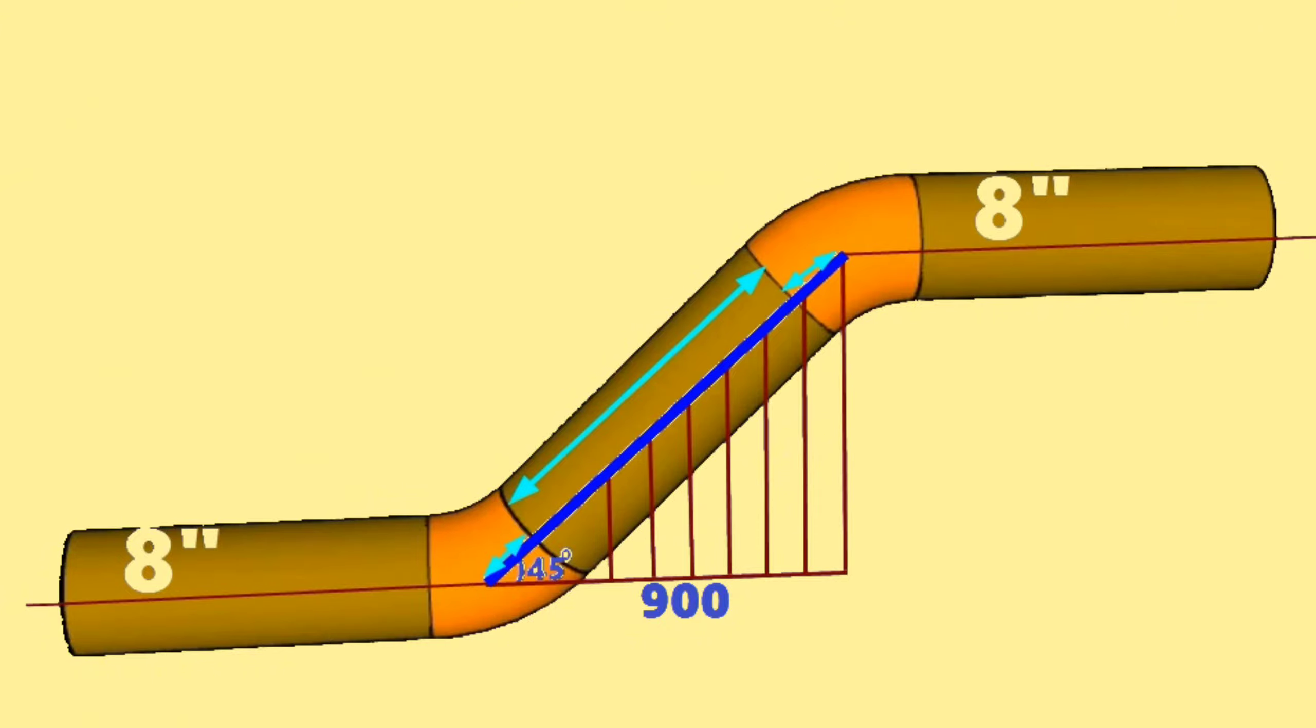The hypotenuse of this right-angle triangle is the distance between the elbows in the pipeline. Let's mark the hypotenuse with big letter H. Since one of the angles of this right triangle is 45 degrees, automatically the other angle will be 45 degrees and the other side will be 900 millimeters as well. We will use the Pythagorean theorem formula to calculate the hypotenuse.